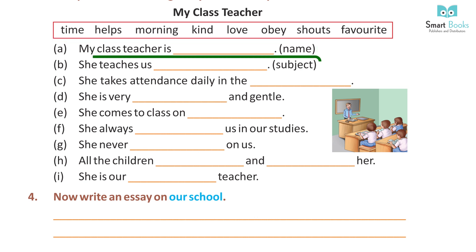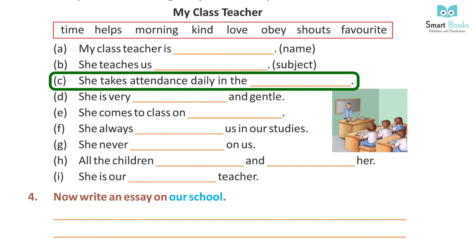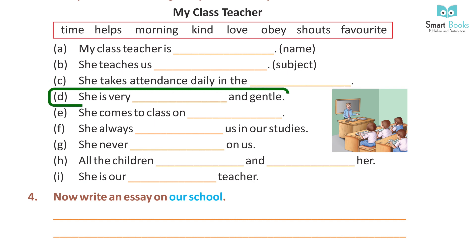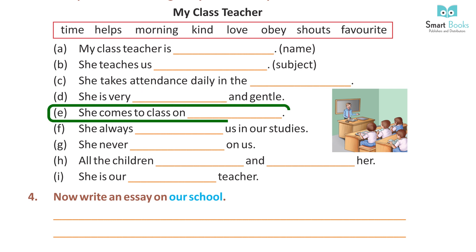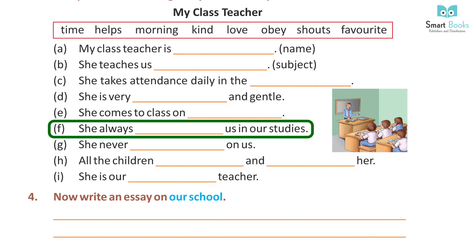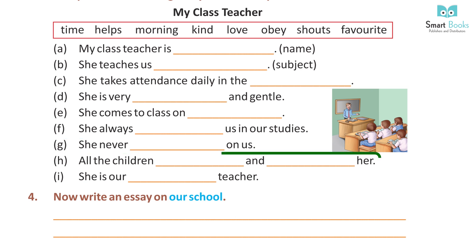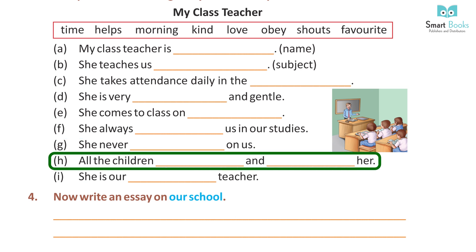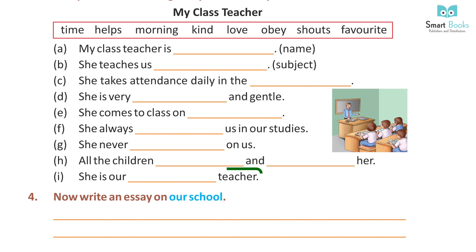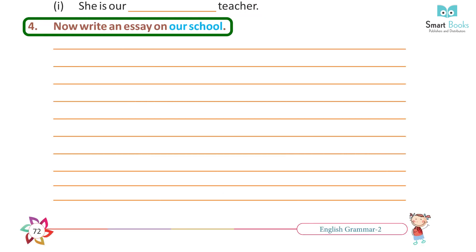a) My class teacher is ___. b) She teaches us ___. c) She takes attendance daily in the ___ — Answer: morning. d) She is very ___ and gentle — Answer: kind. e) She comes to class on ___ — Answer: time. f) She always ___ us in our studies — Answer: helps. g) She never ___ on us — Answer: shouts. h) All the children ___ and ___ her — Answer: obey and love. i) She is our ___ teacher — Answer: favorite.